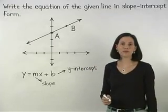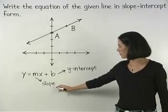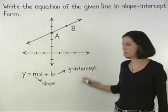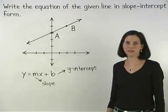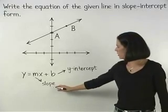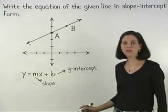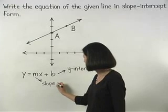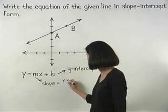So our first step is to find the slope and y-intercept of the given line. To find the slope, remember that we use the ratio rise over run between any two points on the line.